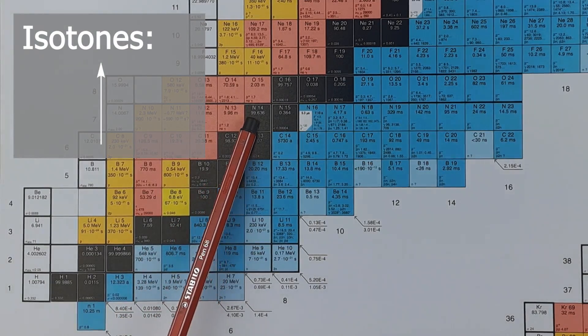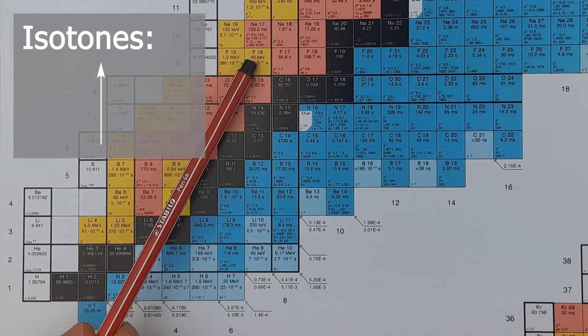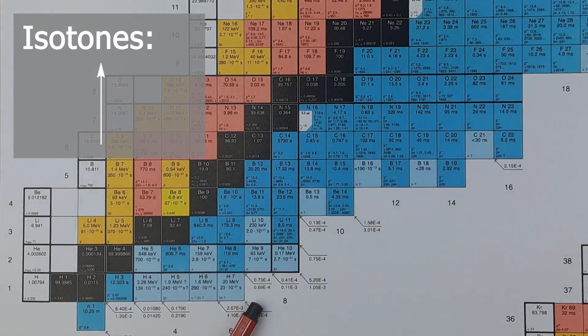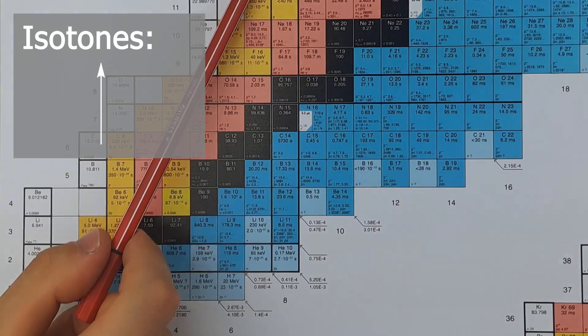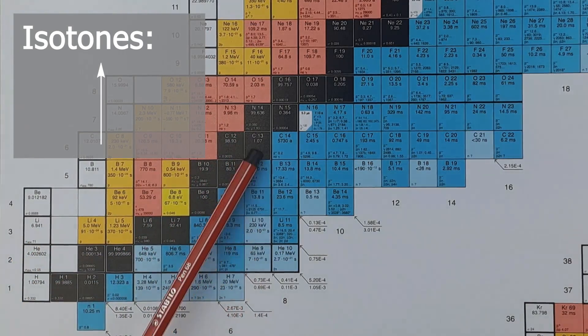Moving only along the y-axis from the top to bottom changes the proton number, and thus the element, but not the neutron number. These nuclides are called isotones.